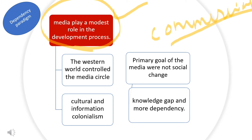The western world controls the media circle and decides what kind of information should be disseminated and which should be omitted. The difference between the haves and have-nots was visible. This led to cultural and information colonialism. The infiltration of information and technological infrastructure resulted in a knowledge gap and more dependency.